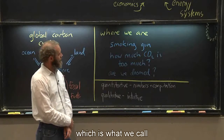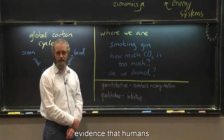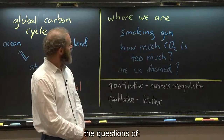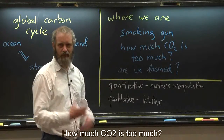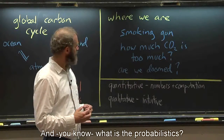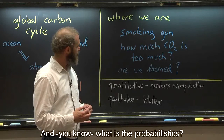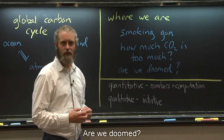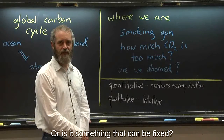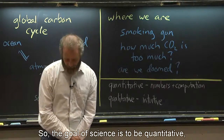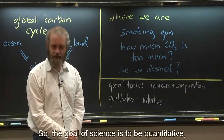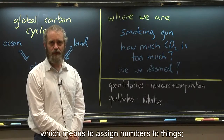Finally, we'll talk about where this leaves us — a smoking gun, which is what we call evidence that humans are having an impact on Earth's climate — the question of how much CO2 is too much, what options we have, and what the prognosis is: are we doomed, or is this something that can be fixed?